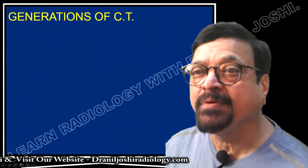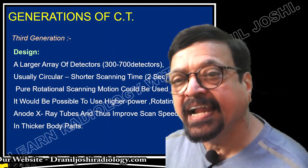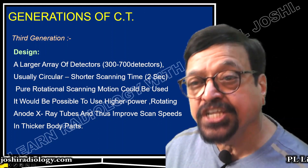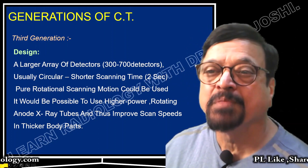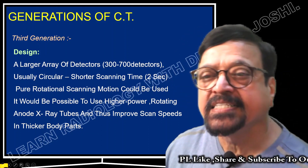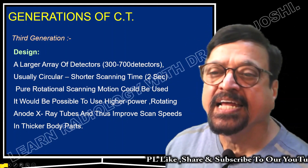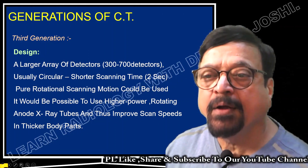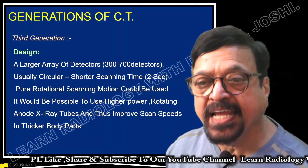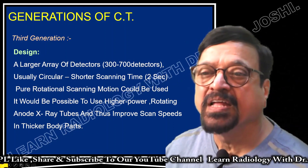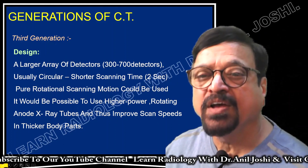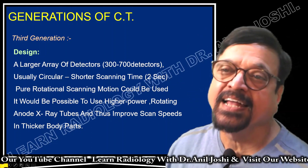The third generation had a larger array of detectors — around 300 to 700 detectors — usually arranged in a circular configuration, giving shorter scanning times because only the tube moves, not the detectors. Pure rotational scanning motion could be used. Higher power rotating anode X-ray tubes could be used to improve scan speed in thicker body parts. High heat dissipation and high rotating anode capability were required for designing a third generation CT scanner.